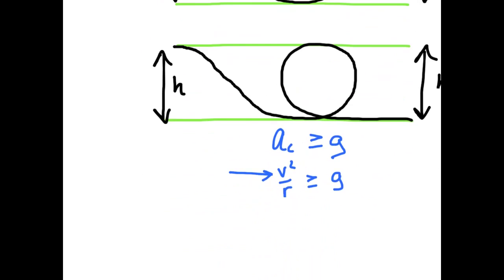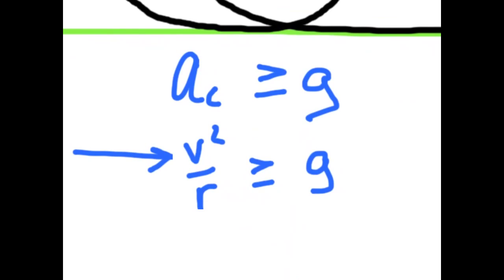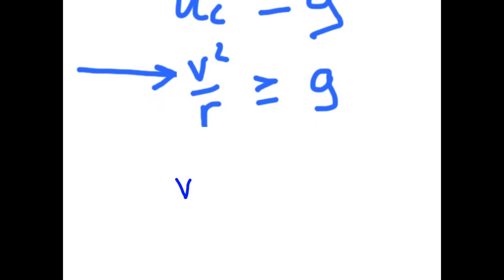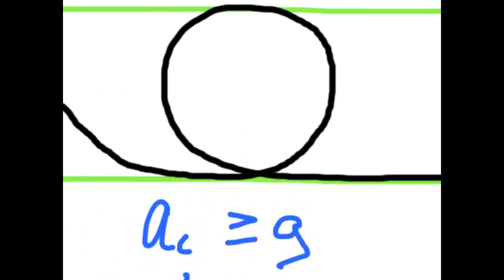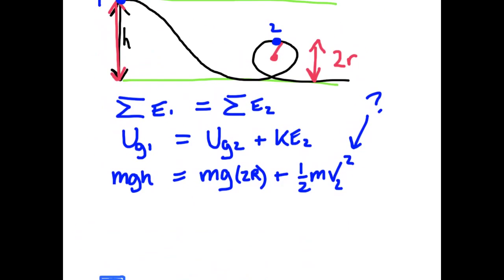v2, as you recall, had to be enough speed such that we are accelerating around the circle at least as great as gravity would allow us to. So then v2 has to be the square root of gr. Let's bring that back up. So the square root of gr needs to go in for v2, and that term is squared anyway, so that's going to leave us with 1 half mgr.